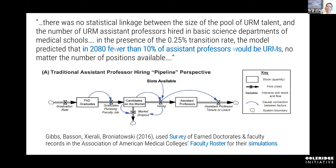What we oftentimes do when we see those numbers is think: let's just fill up the pipeline. Let's get more people into the pipeline on the front end, and certainly they will end up coming out the other end as professors as well. Kenny Gibbs and his colleagues wrote a recent paper showing an interesting result: their model predicts that in 2080, fewer than 10% of STEM professors would be URMs if you just work with that pipeline model.